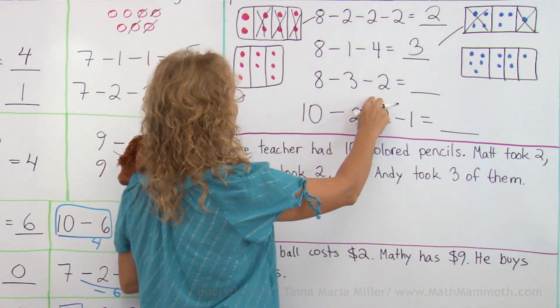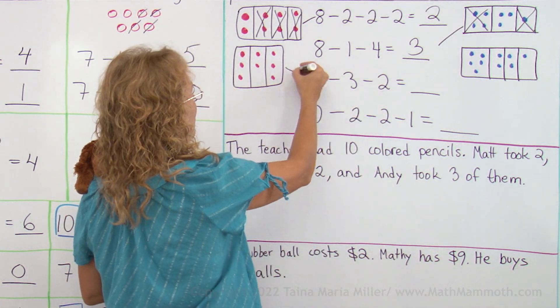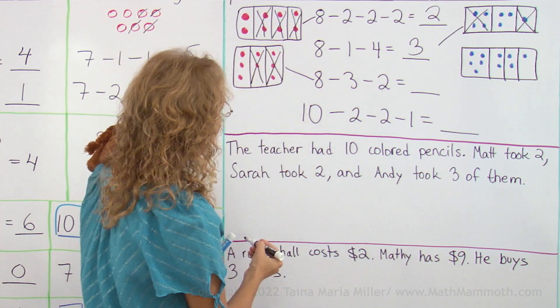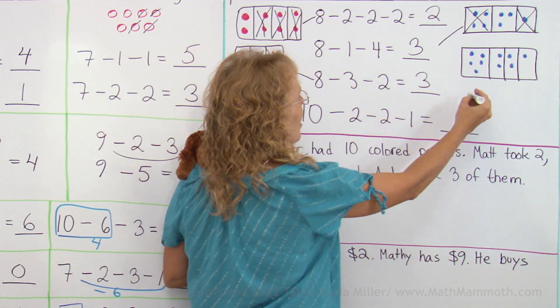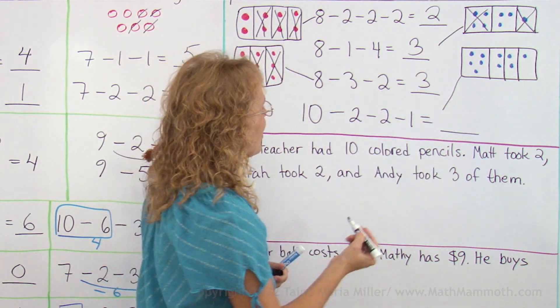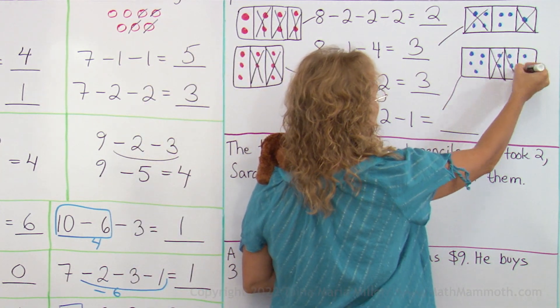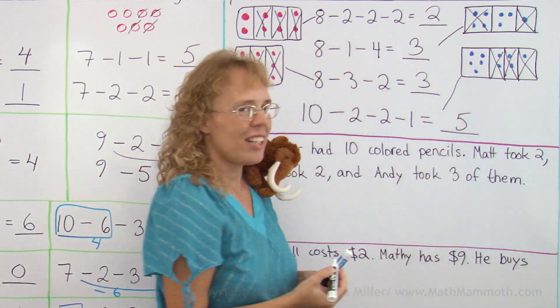8 minus 3 minus 2, I think it is this one, minus 3 minus 2 and 3 are left. And then the last one of course would match there, 10 minus 2, minus 2, minus 1 and 5 are left.